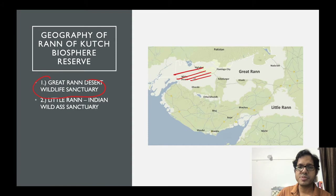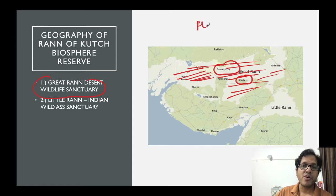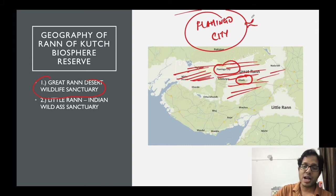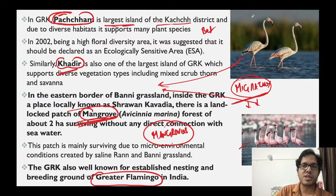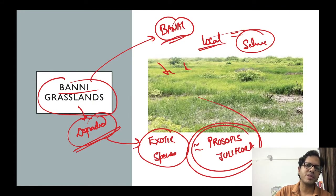In Greater Run of Kutch Wildlife Sanctuary, in that belt - Flamingo City is found in Greater Run of Kutch. It's such a large region where Greater Flamingos come in huge numbers - in lakhs they come to this region.